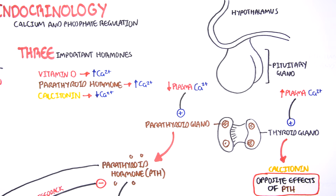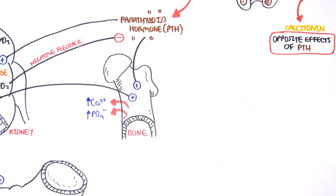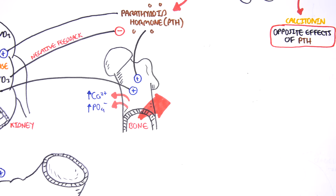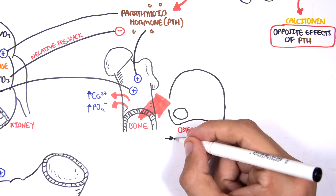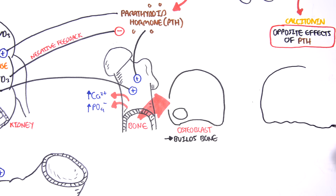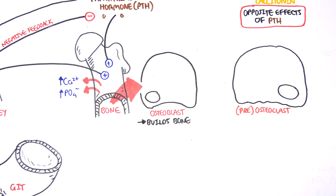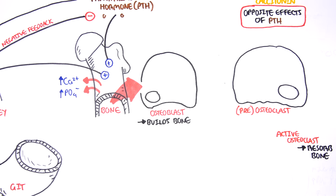Now let's look in more detail at how parathyroid hormone elicits its effects on the bone, since bone is the main reservoir for calcium. The bone is made up of two main cell types: osteoblasts, which build bone, and osteoclasts, which break down bone. The osteoclast in its inactive state is called a pre-osteoclast. It is the active osteoclast that resorbs bone, breaking it down to release calcium and phosphate into the blood.